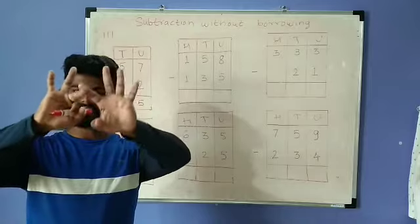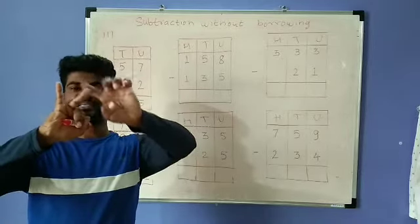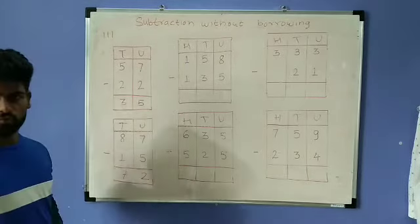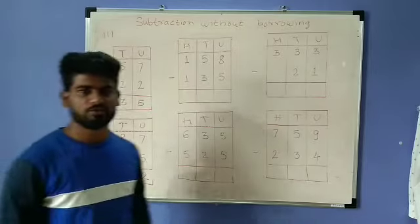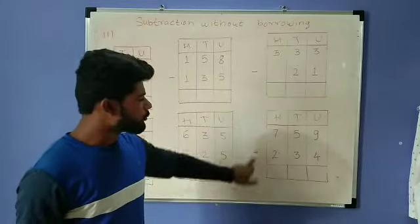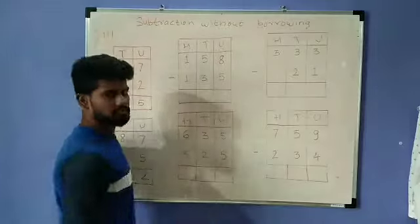Now next: 8 minus 1. From 8, subtract 1. We have 8, from this subtract 1. How many remain? 5 plus 2 is 7. So the answer is 72. These examples you should solve yourself. I will solve the first one.